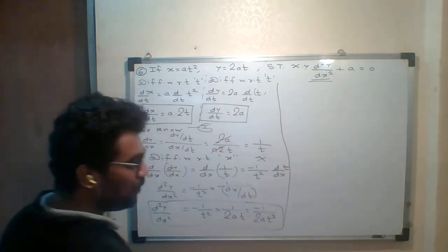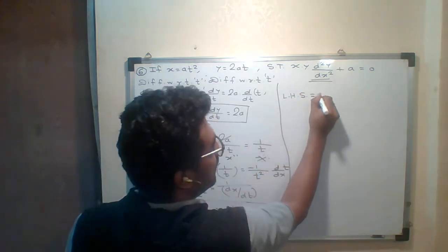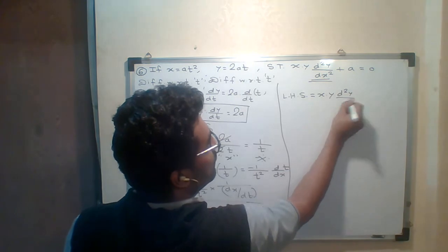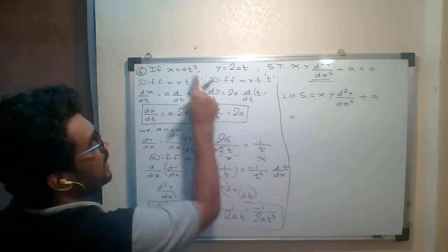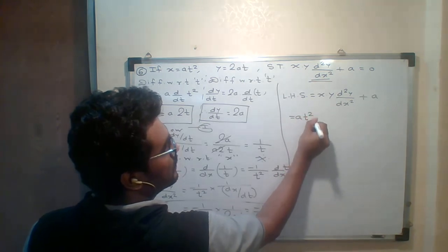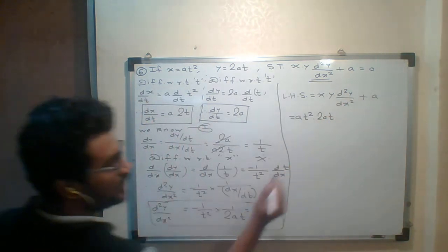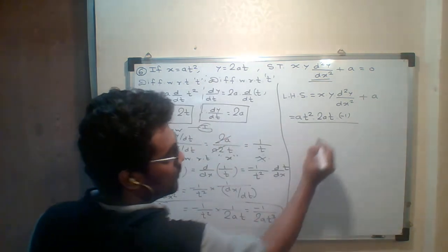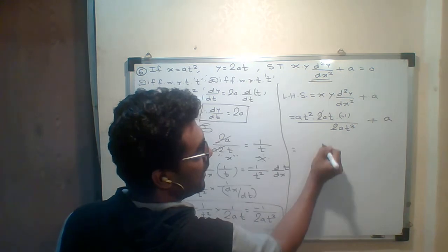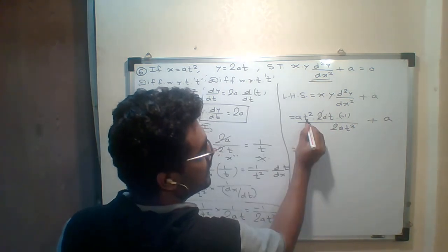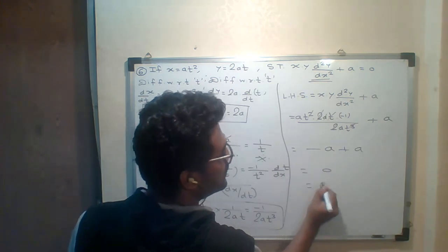Now I will take the LHS: x times y times d²y/dx² plus a. Substituting the values: x equals at², y equals 2at, and d²y/dx² equals minus 1/(2at³). So: at² times 2at times (−1/(2at³)) plus a. The 2, a, and t³ all cancel, leaving minus a plus a, which equals 0, which is our RHS.